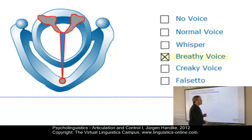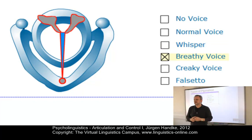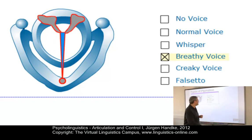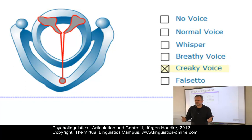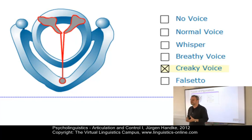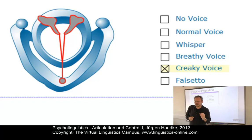The next example is breathy voice, where normal vocal chord vibration is accompanied by some continuous turbulent airflow on top of it. Here is another variant: creaky voice. This is a phonation mode characterized by a low frequency of vibration of the vocal chords, with a very low opening quotient and often some irregularity in periodicity.